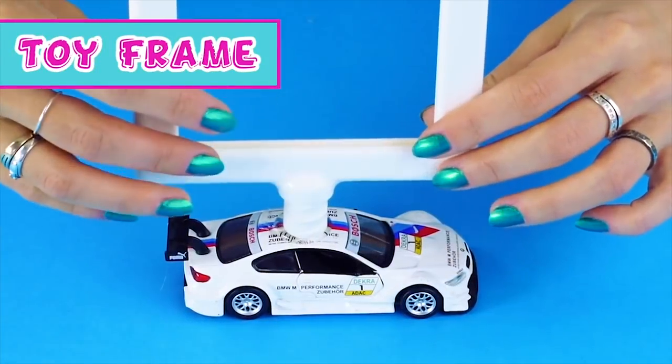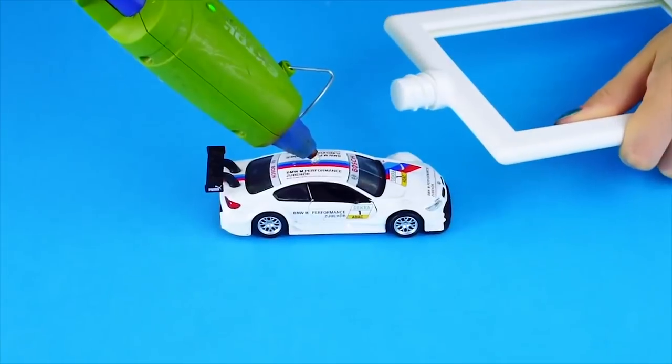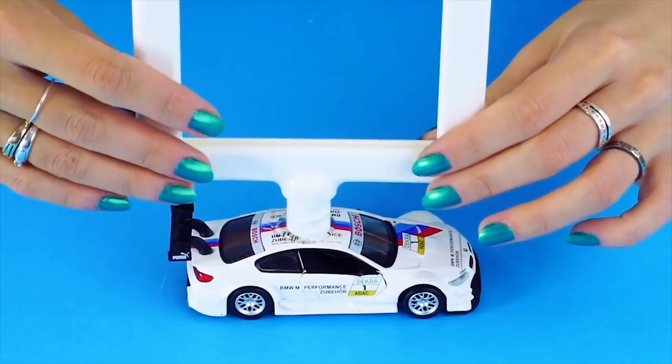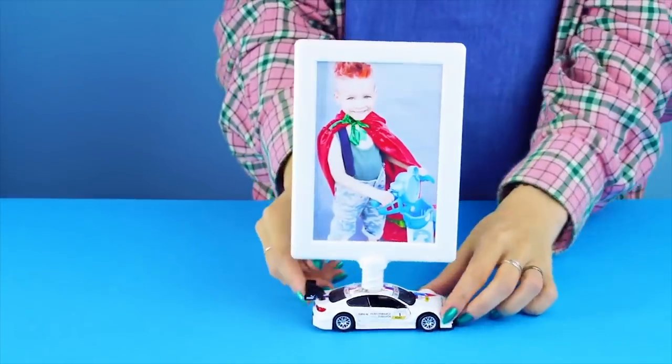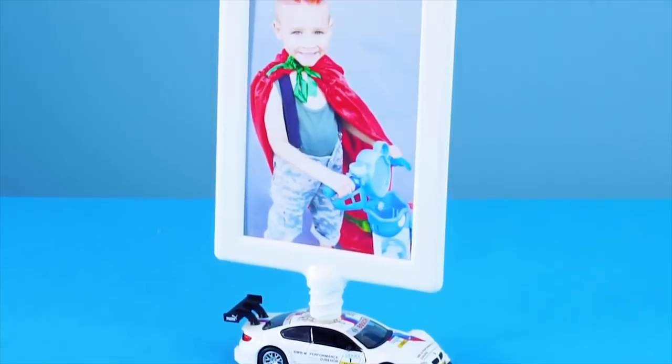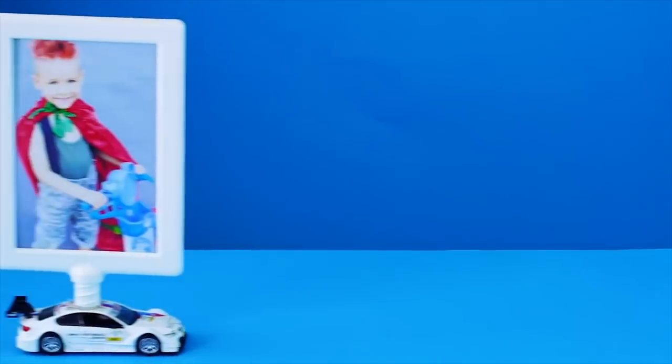Toy frame. Here's a way to spruce up an inexpensive Ikea frame. Let's have some fun. Just unscrew the frame from its original base, then hot glue the frame to the top of a toy car. Drop in your favorite picture and here you go. This little guy is going places. See you later, little buddy.